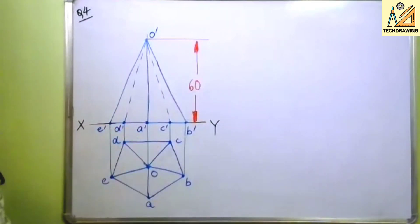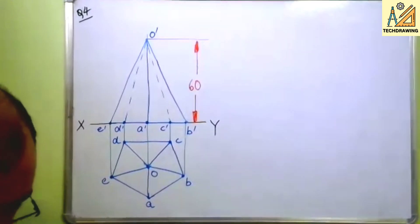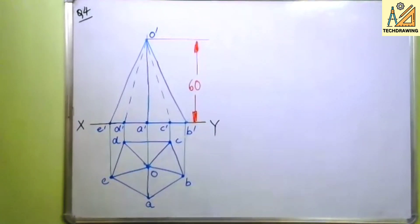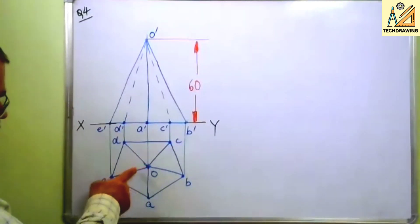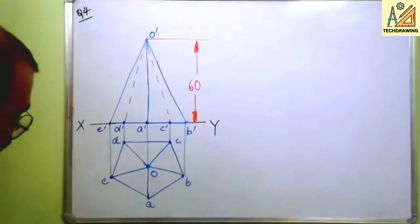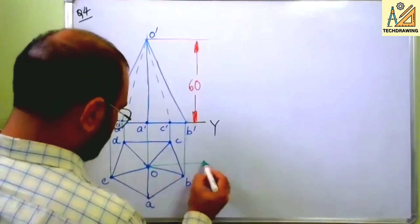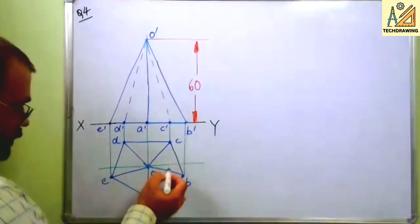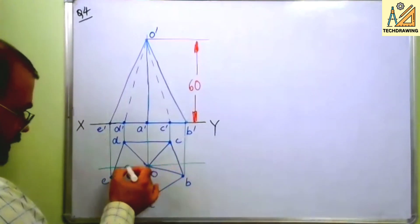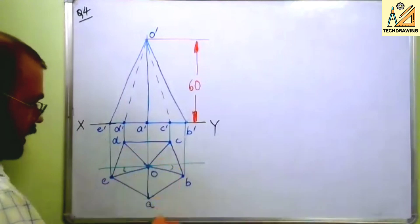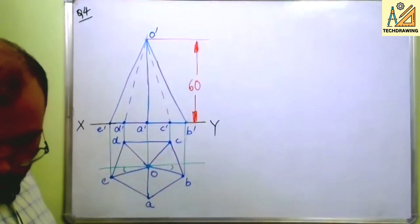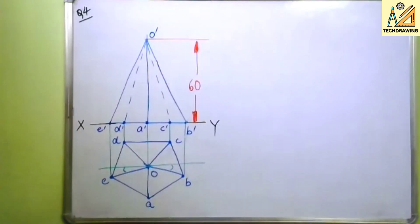Here slant edge is not visible to you. Remember the actual length of slant edge is not visible because if I am drawing a horizontal over here, your slant edges are inclined. Just see this.